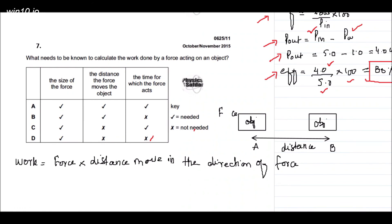This is question number seven, from the October/November 2015 series. The question is: what needs to be known to calculate the work done by a force acting on an object? A table gives three columns: the size of the force, the distance the force moves the object, and the time for which the force acts. The formula is: work equals force times distance moved in the direction of force.